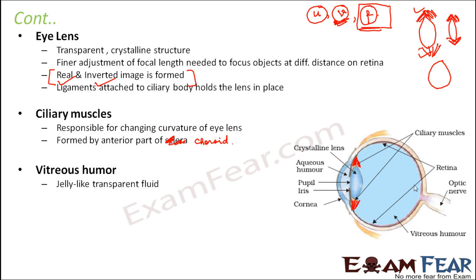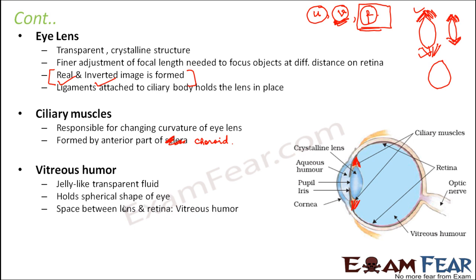Vitreous humor is a jelly-like transparent fluid that fills the entire space between the retina and the lens. Due to the presence of this fluid, the spherical shape of the eye is retained — similar to how air or water fills a balloon to retain its shape. If this fluid were not there, the shape of the eye would be lost. The space between the lens and retina is known as the vitreous space, and the fluid is the vitreous humor.